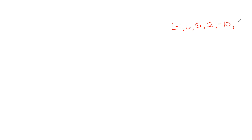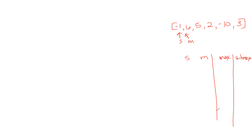We're going to find the maximum sum of a contiguous subarray. Let's get an example going: negative one, six, five, two, negative ten, and three. We want to keep track of a start, a midpoint m, a max, and a sub max. We initialize start to zero, mid to zero, max to the first element of the array, and sub max also to the first element.